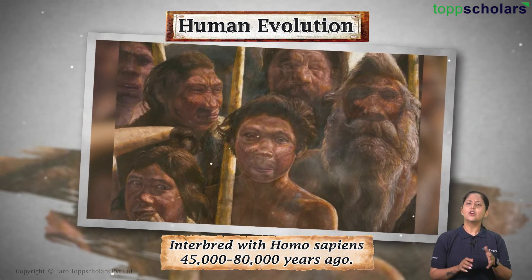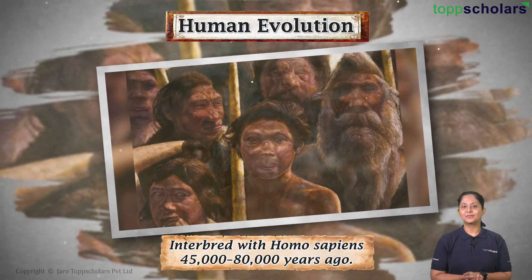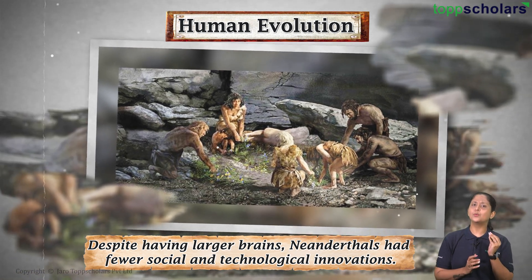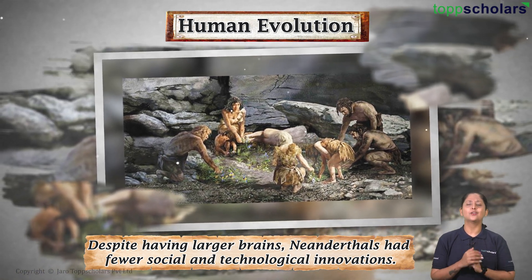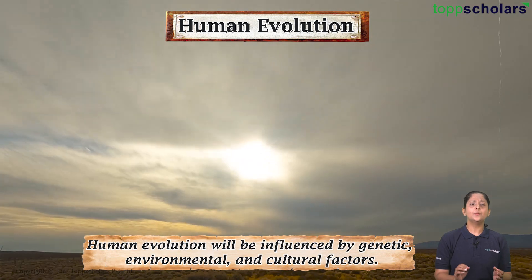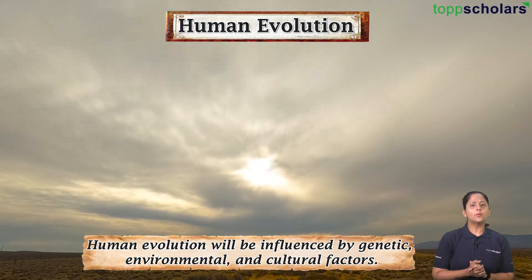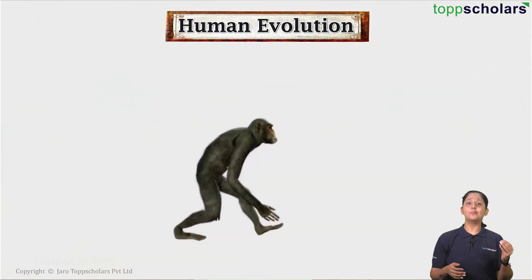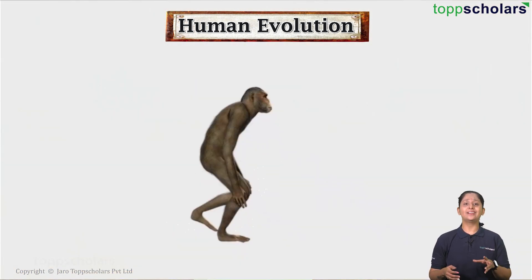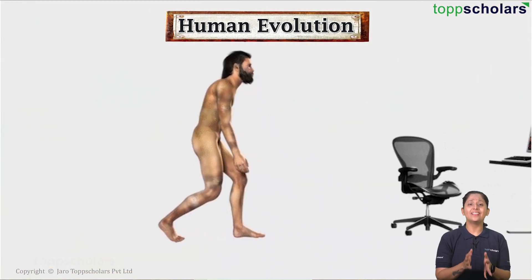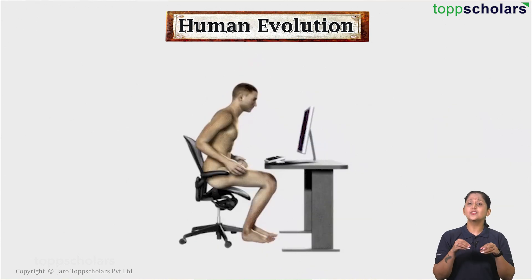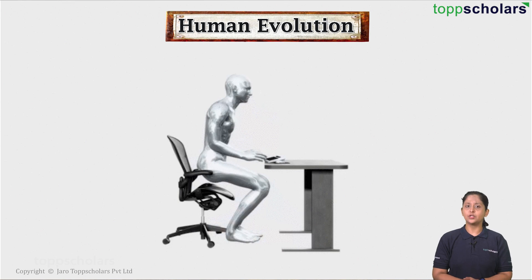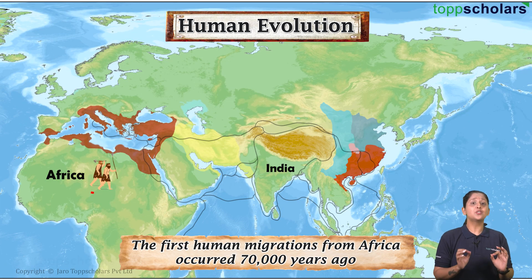Homo neanderthalensis, a separate species, shared ancestry with humans 660,000 years ago and interbred with Homo sapiens 45,000 to 80,000 years ago. Despite having larger brains, Neanderthals had fewer social and technological innovations. Human evolution will be influenced by genetic, environmental, and cultural factors, and our choices today will undoubtedly shape the future of human evolution.